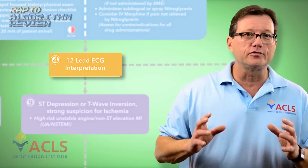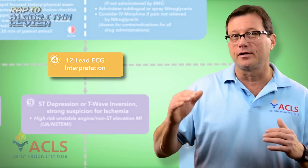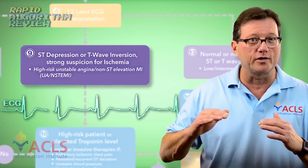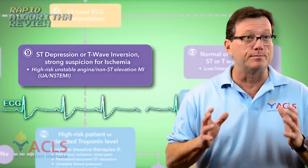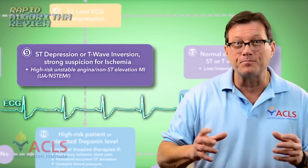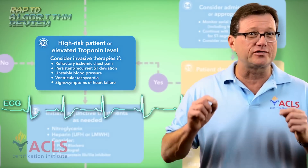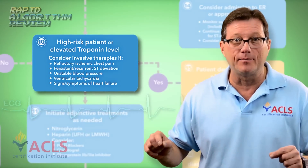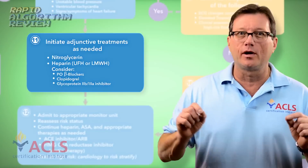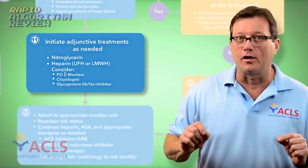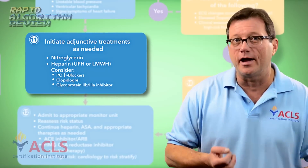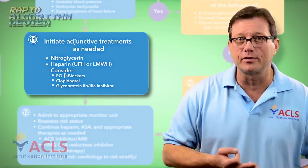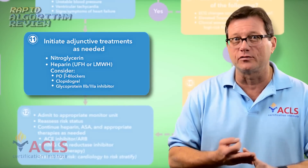If your 12-lead doesn't show ST segment elevation but instead shows some depression or T-wave inversion — which could indicate ischemia — and your patient is still having complaints consistent with an AMI, you still may want to follow your protocol. Still consider nitroglycerin and aspirin therapy, and get an expert involved with this patient right away.